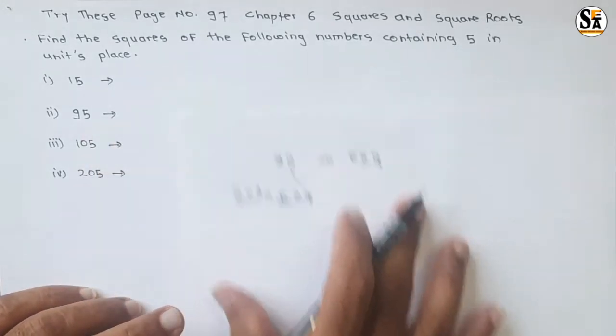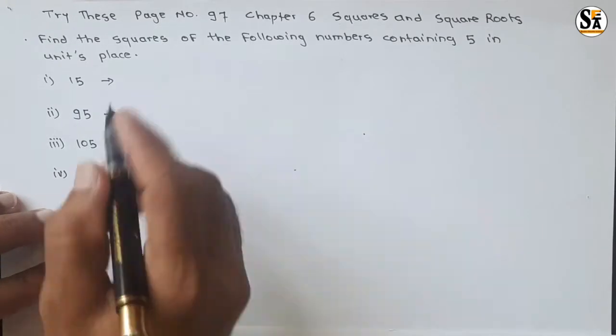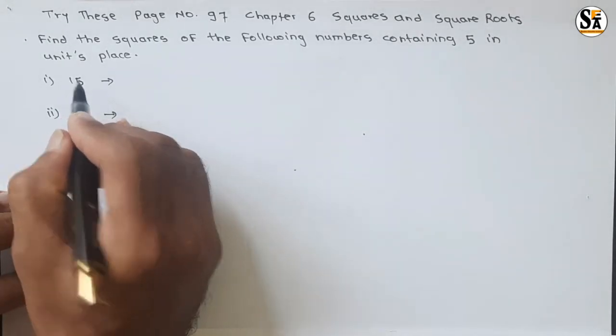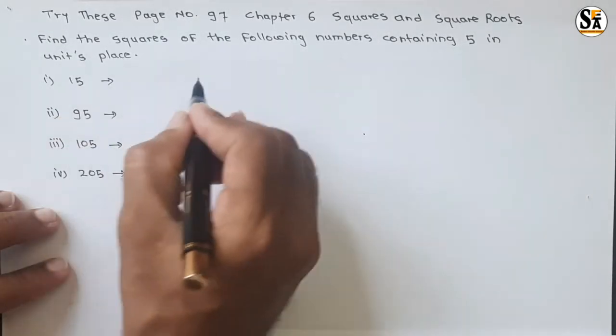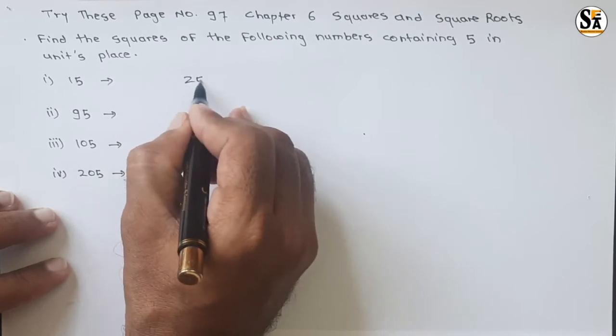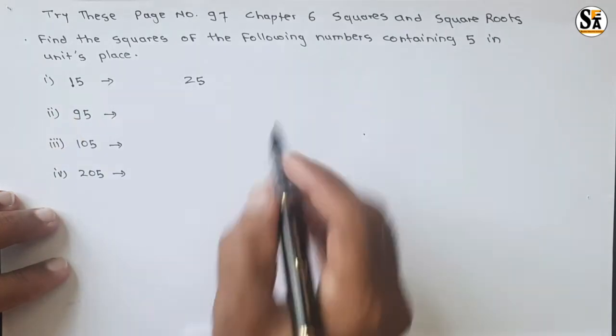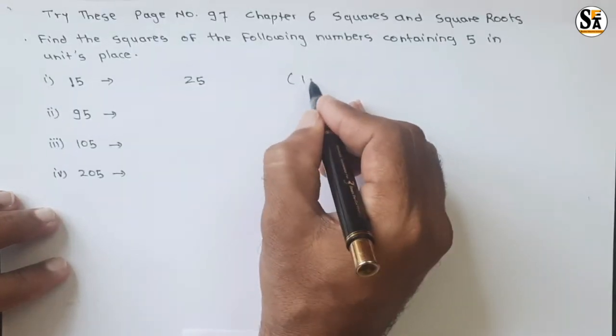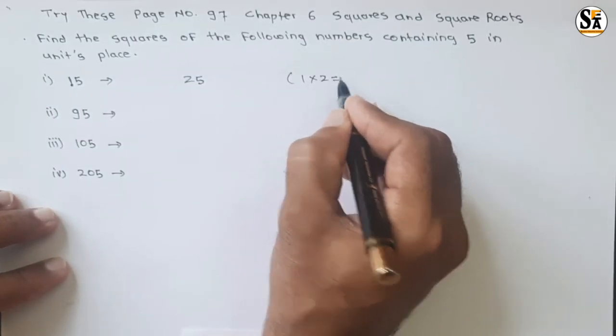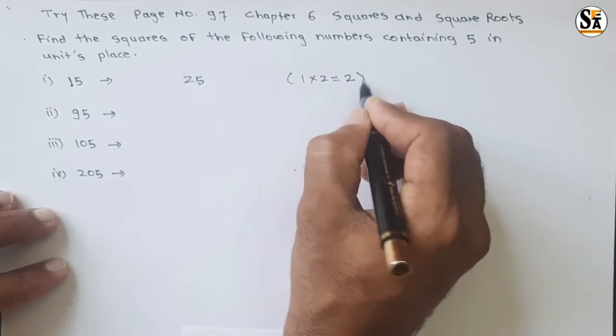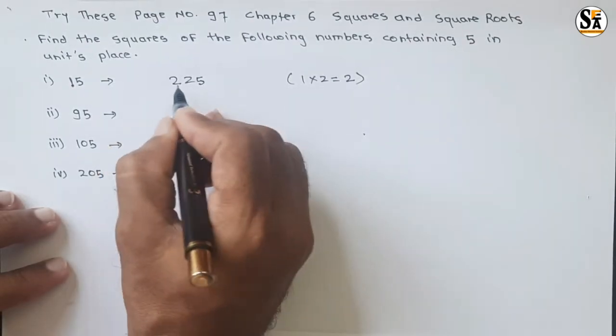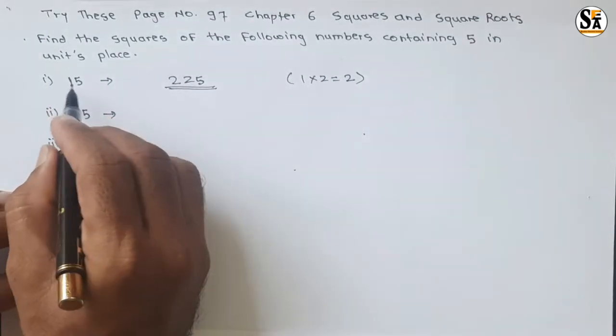So we will use this trick. Here is the number 15: write 25, and the remaining number is 1, so multiply 1 with the next number which is 2. The multiplication is 2, so write 2 here. So 225 is the square of number 15.